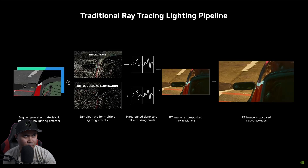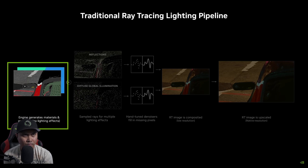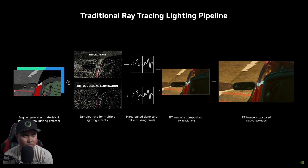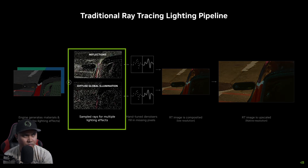First, we need to understand how a ray traced image is computed. The game engine has the materials and geometry for the scene, but that doesn't tell us how the scene looks because we haven't computed how all the lighting interacts with the scene. To compute the final image with ray tracing, we send rays into the scene to interact with the lighting and geometry.